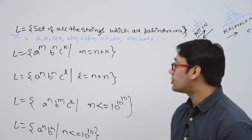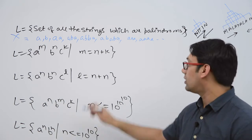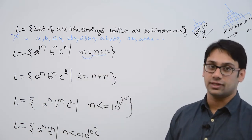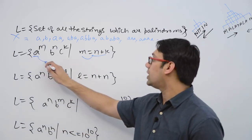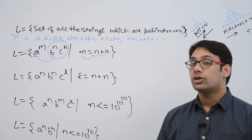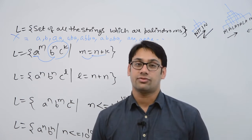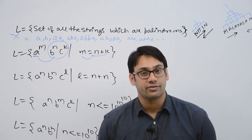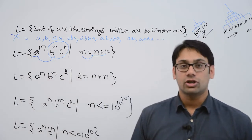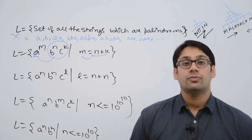Take the next example: a raised to the power m, b raised to the power n, c raised to the power k, where m is equal to n plus k. That means the length of a's should be equivalent to the combined length of b's and c's. But is there any way to compare the length of a with the length of b and c in a finite automata? No. If the string length can be infinite, you cannot do it. For this language, you cannot make a finite automata, and therefore regular expression is not possible.